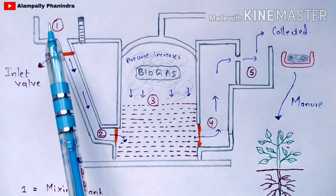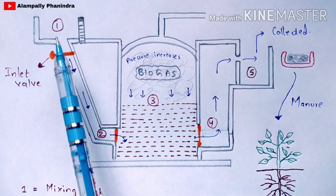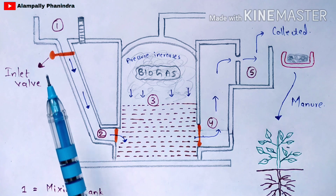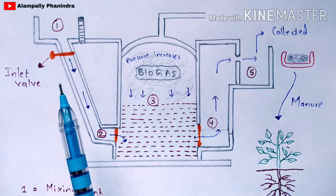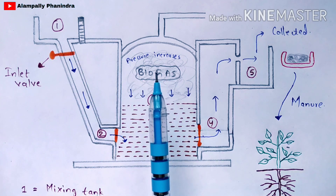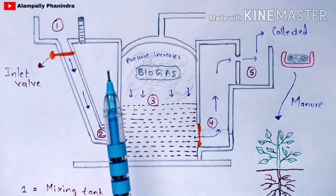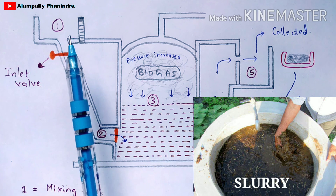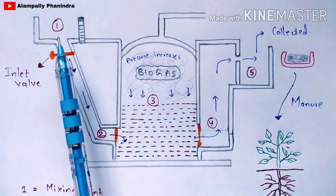Before entering into the process, you have to prepare a mixture to place in the mixing tank. As mentioned, methane production uses animal dung — in this case, cow dung or buffalo dung. That dung is mixed with water to form a slurry, and that slurry is placed in the mixing tank.